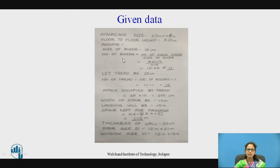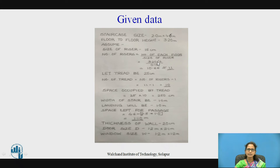For a public building, we will assume the riser size as 15 cm. The number of risers is found by dividing the height of each floor by the riser size. Since this is a dogleg staircase with 2 flights, height of each floor is 3.2m divided by 2, giving 1.6m. Dividing 1.6m by 15 cm gives 10.66, which rounds off to 11 risers.